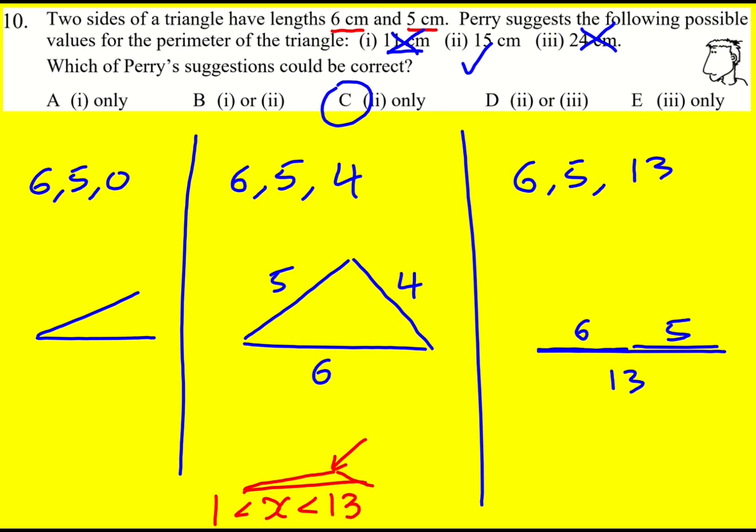So that is actually the condition, and if you understand that you can go straight to the answer and realize that 0 is too small, 4 is okay, and 13 is too big. Lots of values in between are okay as well.